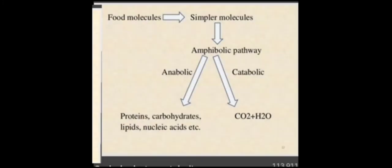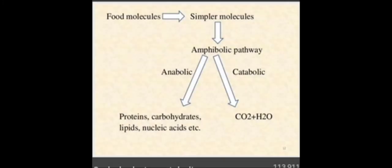Now we can see the food molecules. When we take food, simpler molecules are divided into the amphibolic pathway. The amphibolic pathway is divided into two parts: anabolic pathway and catabolic pathway. In the anabolic pathway, proteins, carbohydrates, lipids, and nucleic acids are formed. In the catabolic pathway, carbon dioxide and water molecules are produced.